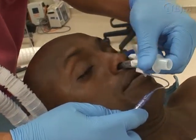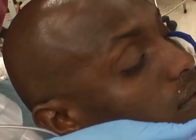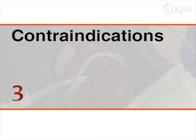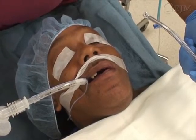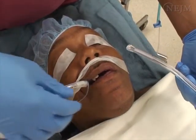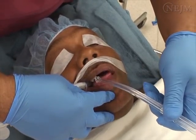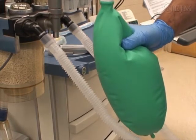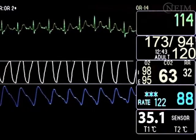Endotracheal extubation is indicated when the clinical conditions that required airway protection with an endotracheal tube or that required mechanical ventilation are no longer present. Extubation is contraindicated when the patient's ability to protect the airway is impaired — that is, the patient does not have protective airway reflexes — or when the patient cannot maintain adequate spontaneous respiration, such as when the patient has persistent respiratory muscle weakness, hypoxemia, or hypercarbia.